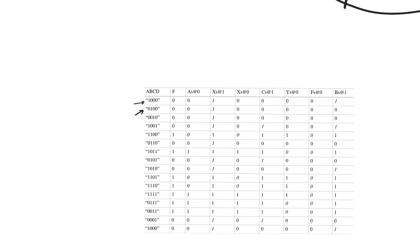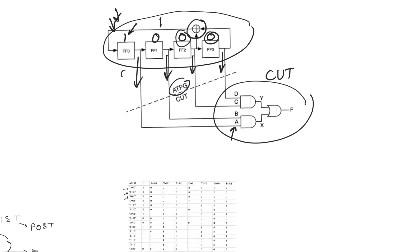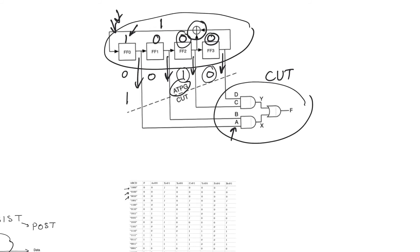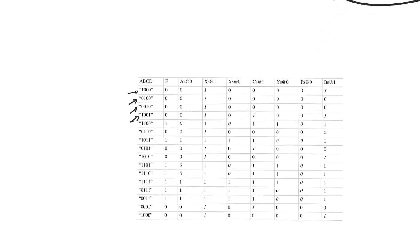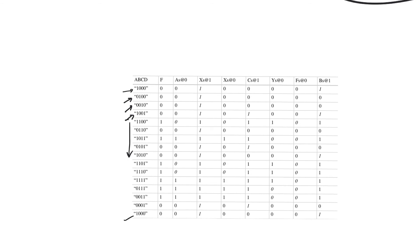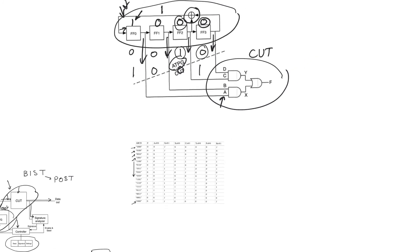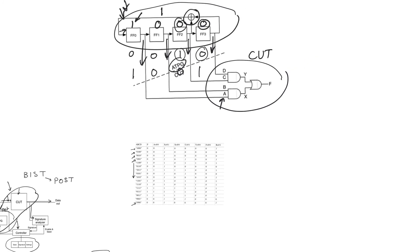Tracing through, for 15 cycles you get independent contents in the shift register. After the 15th cycle, the pattern repeats beginning again with 1000. So the pattern at the output of the LFSR is periodic. If the LFSR is well-designed, the period is 2^M − 1 cycles. With 4 bits, the period is 15 cycles, so every 15 cycles the pattern repeats.